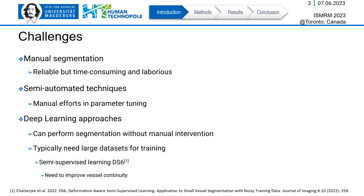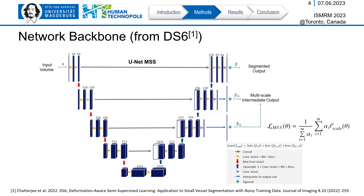This research aims to improve vessel continuity using maximum intensity projection as an additional loss term. In this work, we have used a U-Net model with multi-scale supervision from DS6 as the network backbone. Loss is calculated not only on the final output of the model but at multiple scales by taking two intermediate outputs from the network in addition to the final one. The additional intermediate outputs are first supplied to fully connected convolution layers and then interpolated to get the original input size. All three outputs are compared against the ground truth for loss calculation, and a weighted sum of these three is back-propagated to train the model.